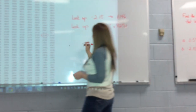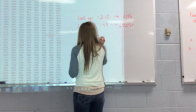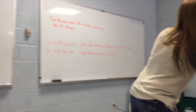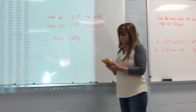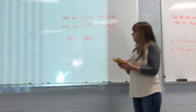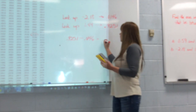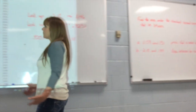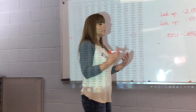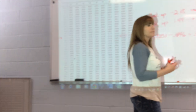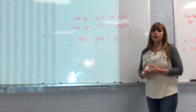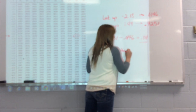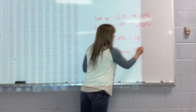To find the area in between, I'm going to take the larger value and subtract the smaller, and I get 0.911. The interpretation is that the probability of having a z-score between negative 2.18 and 1.44 is 0.911. The area of the curve that makes up that region is 91.1%.